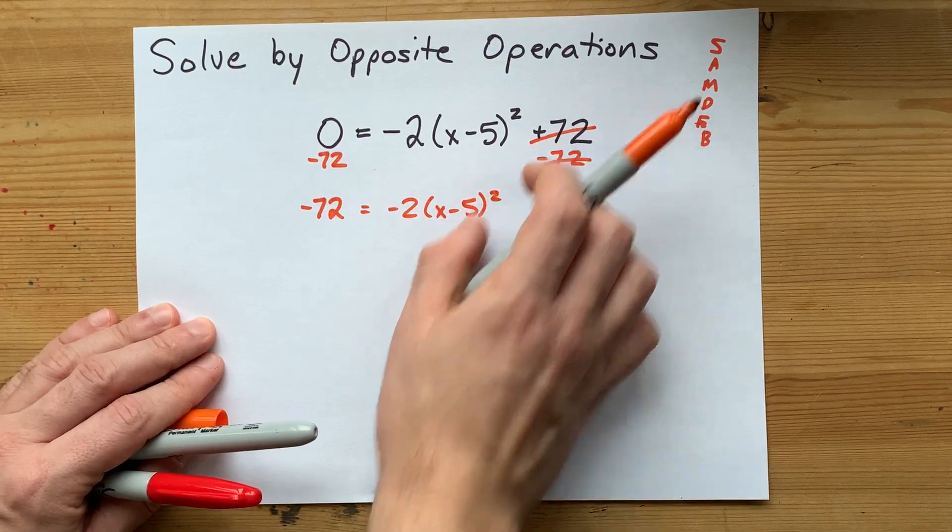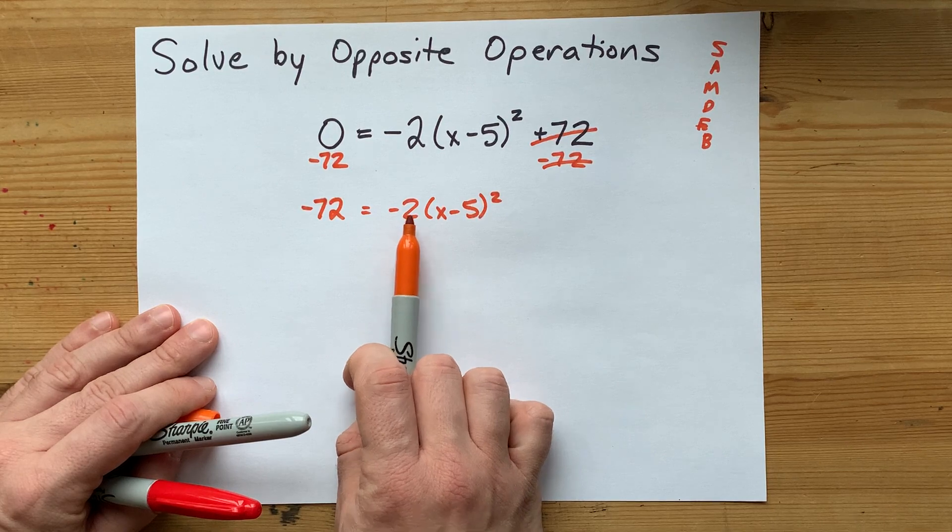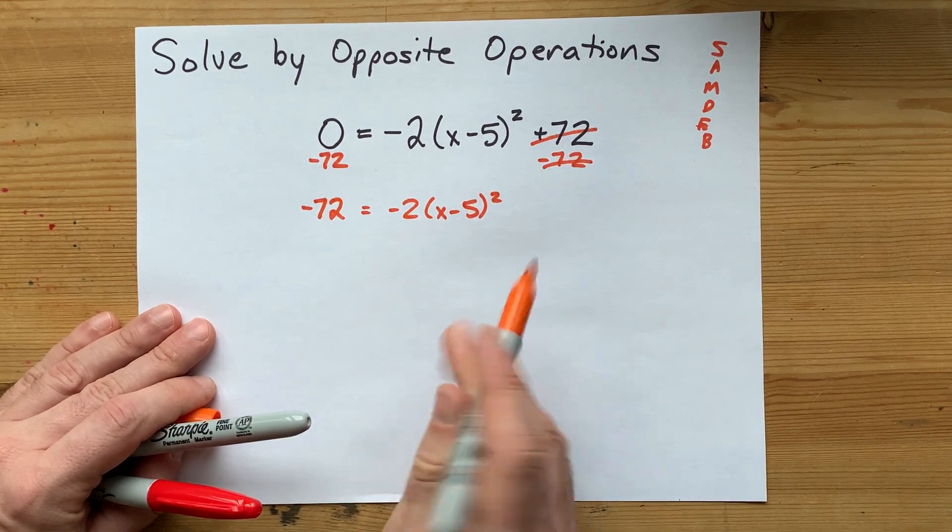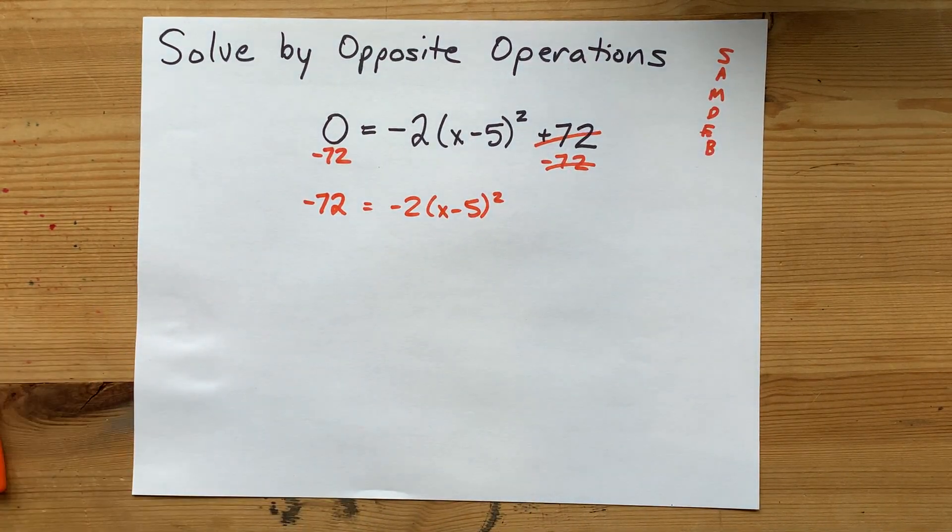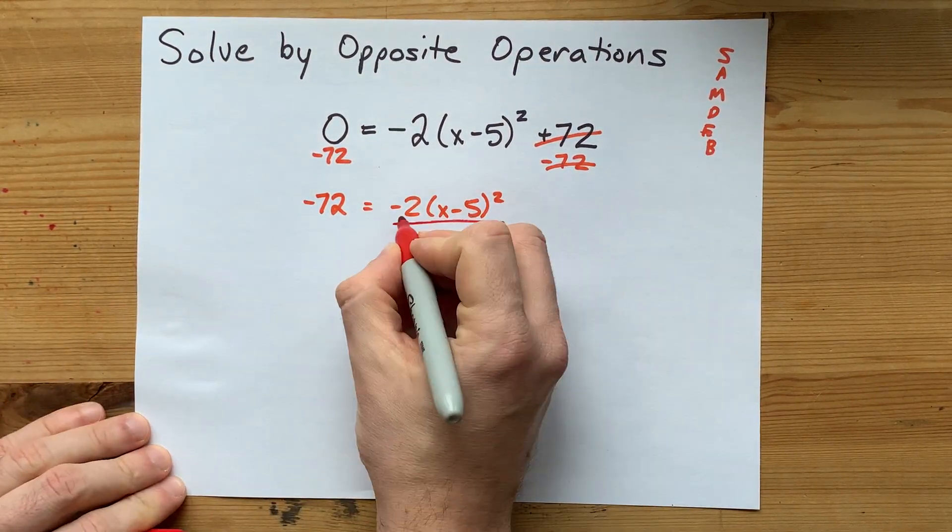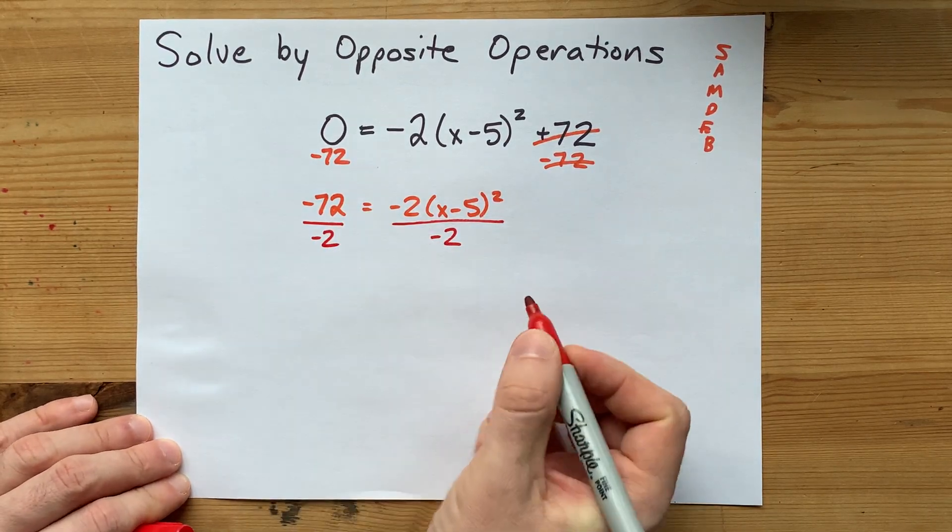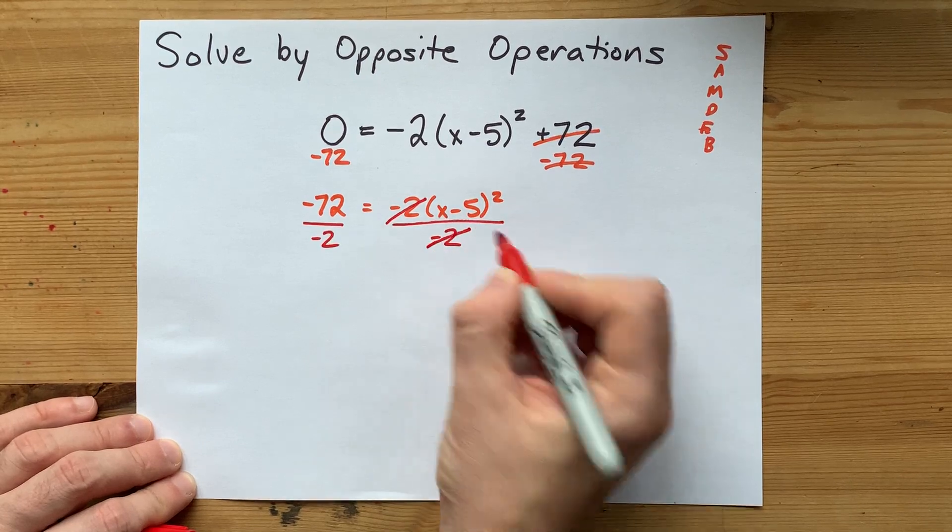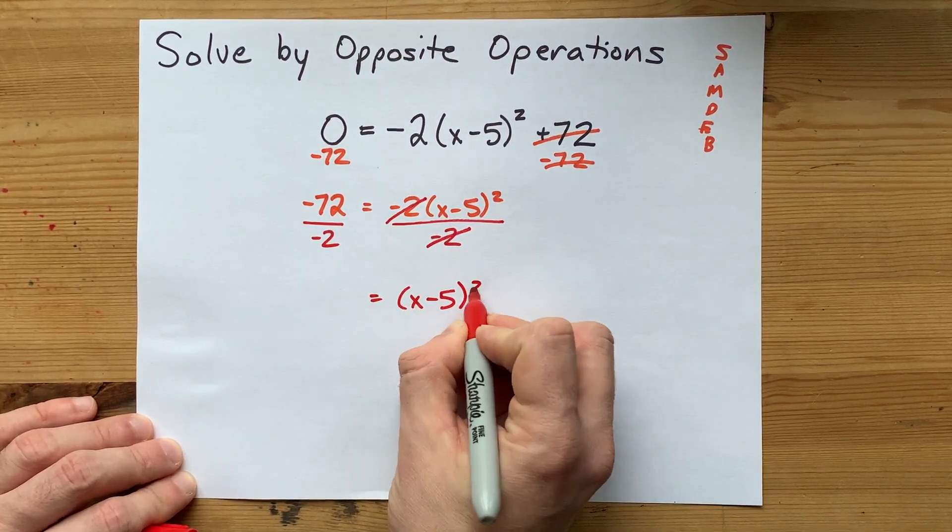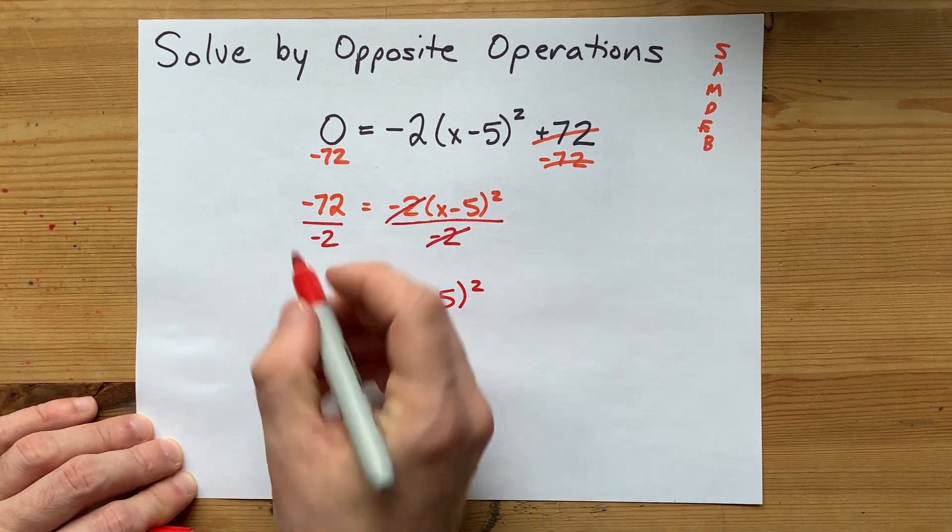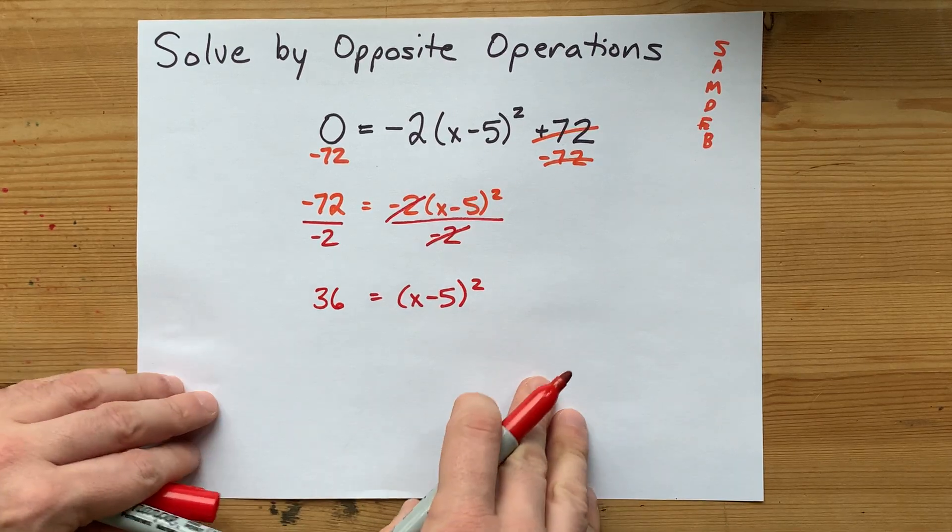Let's undo multiplication or division. There's only one of those here. It's this negative 2 times this jazz. How do you undo multiplying by negative 2? Well, the answer to that is by dividing. The opposite of multiplication is division. So divide both sides by negative 2. These negative 2s cancel each other out, so you're left with x minus 5 squared on the right and this, which is positive 36 on the left.